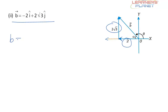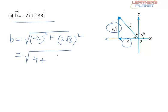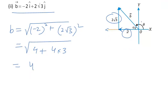So the magnitude of b will be given by minus 2 whole square plus 2 root 3 whole square. So this value is equal to 4 plus, this is 4 into 3. So if you solve this, you will get the magnitude as 4.